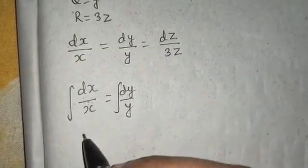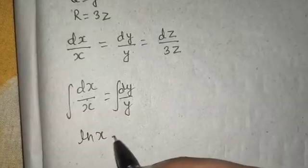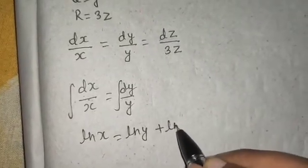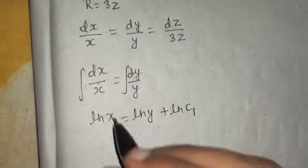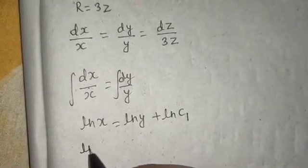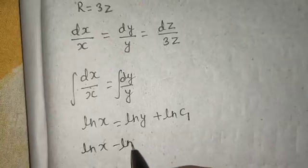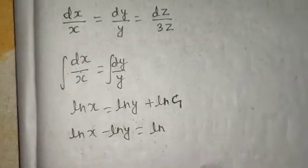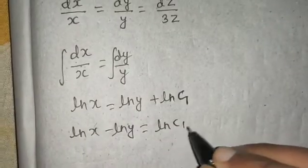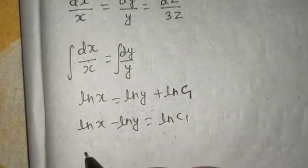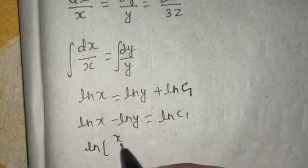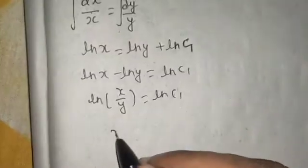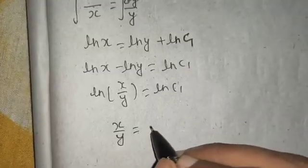If you integrate this, both side integration of dx by x is ln x, that of dy by y is ln y, you will get a constant, let's name that ln C1. If you take this to this side, you will get ln x minus ln y equals to ln C1. Log a minus log b is log a by b, so ln(x/y) equals to ln C1. From here you will get x/y equals to C1 on removing log. Let's name this as equation number one.